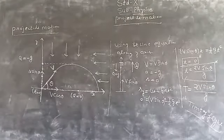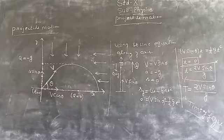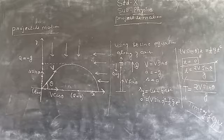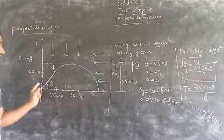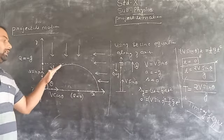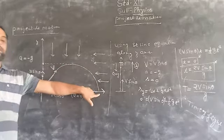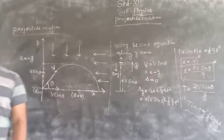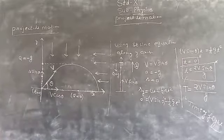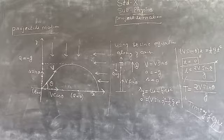The time of flight is the total time for which the particle stays in the air. When the particle is projected from the ground, it travels through the air and returns to the ground. The total time consumed by the particle during this journey is known as the time of flight.